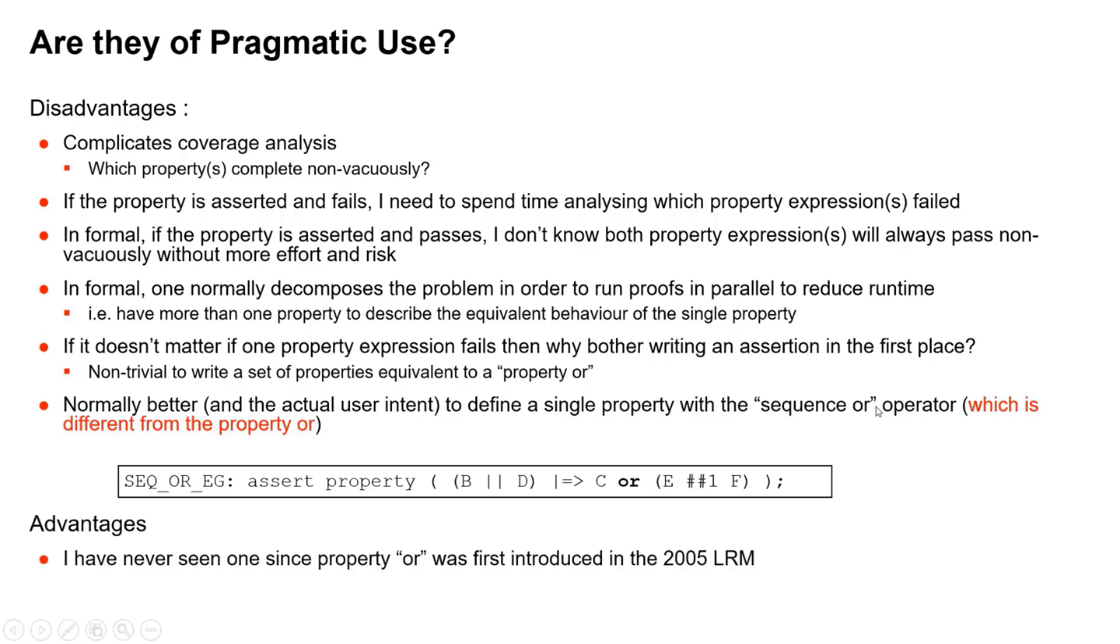Okay, so there are two different kinds of OR operators which are the same keyword. So this is a sequence OR, the one on the previous slide is a property OR. Advantages? Literally and objectively, I've never seen a single advantage of doing this since it's been in the language, which was the very first release of the language reference manual. Unless you think having a single property is an advantage, and if you do then I would disagree with you, I'm afraid.